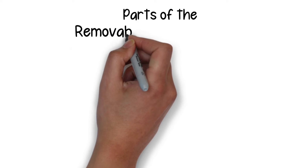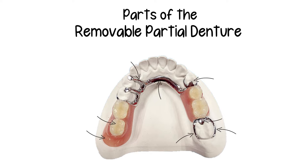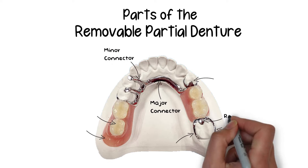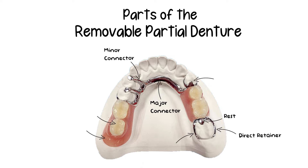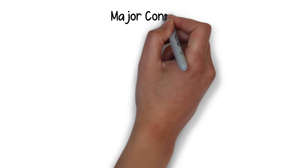Hello and welcome everyone. The removable partial denture, also known as cast partial denture according to most literature, has in total eight different parts. These are named as the major connectors, the minor connectors, the rests, the direct retainers, the stabilizing components, the indirect retainers, the denture base, and finally the artificial teeth. In this video I will briefly go through them.